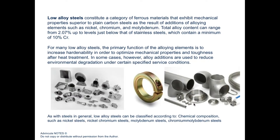For low alloy steels, with a total alloying content of about 2% and a minimum of 10% chromium, nickel, chromium, and molybdenum are the most common elements. Chromium is primarily used to increase resistance against corrosion. Low alloy steels are elements alloyed to steel primarily to increase hardenability in order to optimize mechanical properties and toughness after heat treatment, commonly found as nickel, nickel-chromium, and molybdenum steels used in engine parts, valves, and locks.